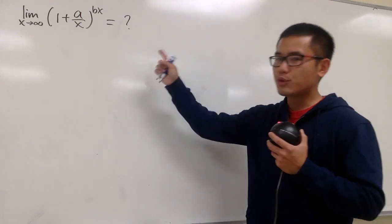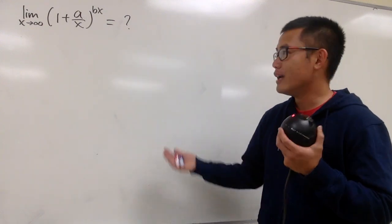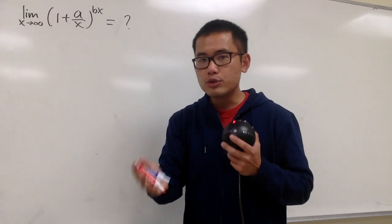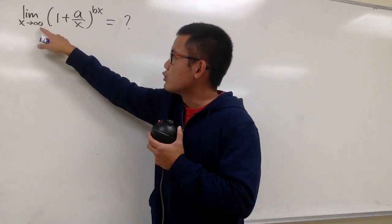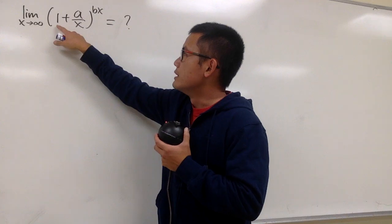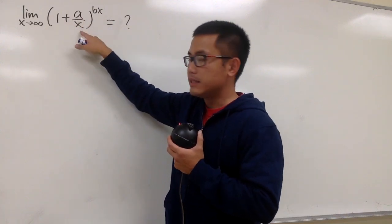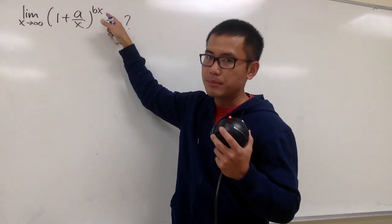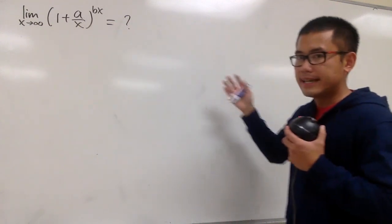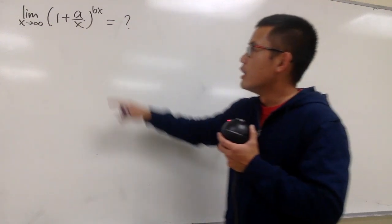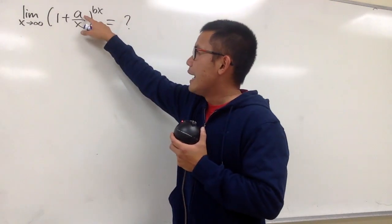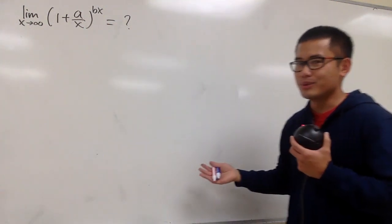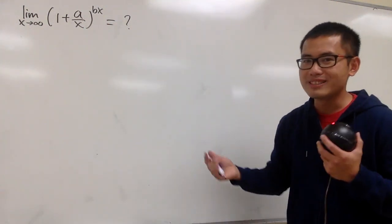My goal is to show you what this is going to be, and we'll end up with a nice formula. You can just quote this as the fact whenever you encounter this limit question. But if you have to do this from scratch — for example, the limit as x goes to infinity of (1 + 2/x)^(5x) — follow the same steps, changing a to 2 and b to 5.